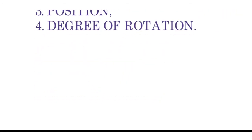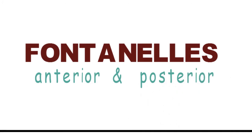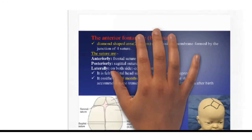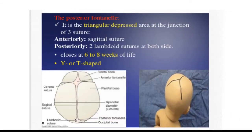There are many fontanelles but we are most concerned with the anterior and posterior fontanelles. The anterior fontanelle, also called the bregma, is a diamond-shaped area at the junction of the frontal suture, sagittal suture, and coronal suture, between the two frontal bones and two parietal bones. The posterior fontanelle is a triangular depressed area at the junction of the sagittal suture and lambdoid suture, between the occipital bone and two parietal bones. It is normally open at birth and closes by 6–8 weeks of life.